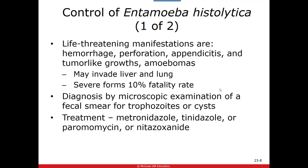If Entamoeba histolytica damages the intestinal wall lining, it can cause more serious side effects beyond abdominal pain, fever, and diarrhea — it can develop into a more life-threatening disease. It can cause hemorrhaging, appendicitis, perforation of the intestine. There may be tumor-like growths called amoebomas, and it may spread to the liver or lungs. In severe forms, depending on immune system and healthcare available, it has a 10% fatality rate. About one in ten people carries this organism, and most are asymptomatic.